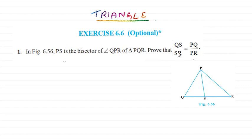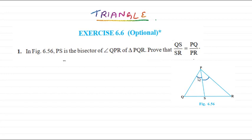This is question number one from the Triangle optional exercise. In triangle PQR, PS is the bisector of angle PQR, meaning these two angles will be equal. We have to prove that QS/SR equals PQ/PR. As you can see, these sides appear in two triangles.